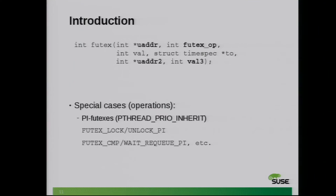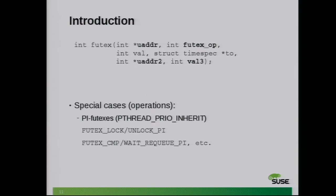There are mainly two special cases when using Futexes. The first is the support for priority inheritance. If you have priority inversion problems — when you have two tasks, one with lower priority holding a lock, then another task with higher priority tries to acquire it, sees it's contended, and blocks.